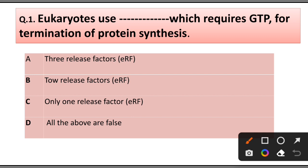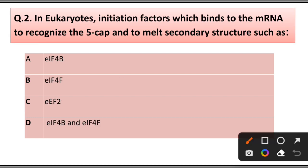Question number 1: Eukaryotes use which requires GTP for termination of protein synthesis? A) Three release factors eRF, B) Two release factors eRF, C) Only one release factor eRF, D) All of the above are false. Answer is option C, only one release factor.